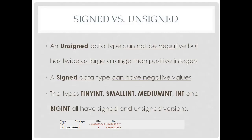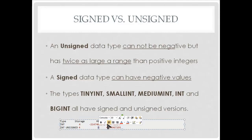Signed data types have a smaller positive range but they can have negative numbers or values. You can see down here we have an example — an int, which is by default signed, can go from a negative number all the way to a positive number. If it's unsigned, it can't have any negative numbers so it starts at zero but goes to double the signed positive value.